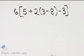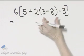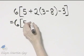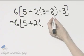Remember order of operations as we simplify this expression. We work with the innermost set first, so I'll simply rewrite 5 plus 2 parentheses, 3 minus 8.